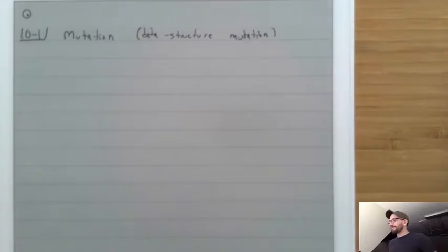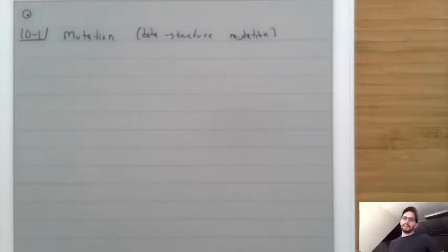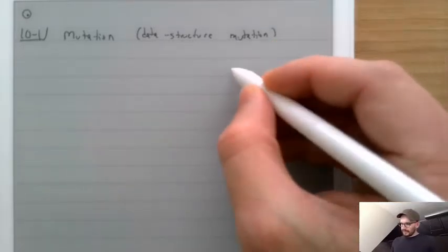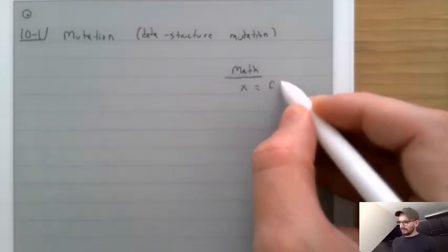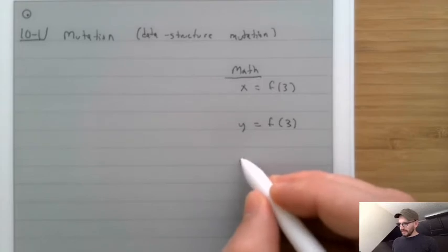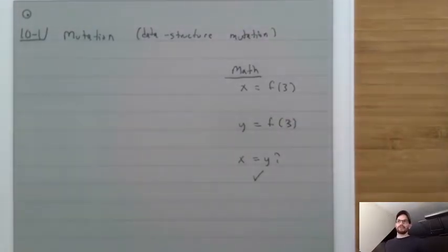What is mutation? When we say mutation, we mean how in programming languages variables truly vary over time and may change their value behind the scenes. Suppose that we are writing in math and I write x equals f(3) and y equals f(3). Is x equal to y? The answer is always yes, because in math f(3) is always the same as every other call to f(3).